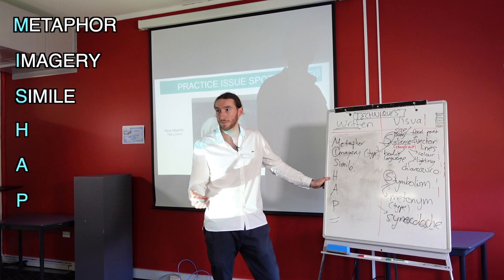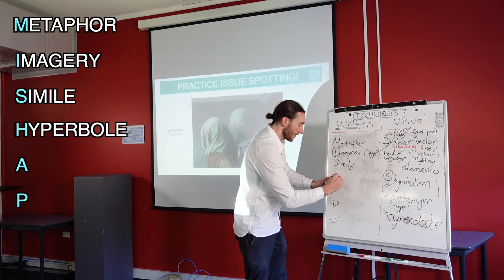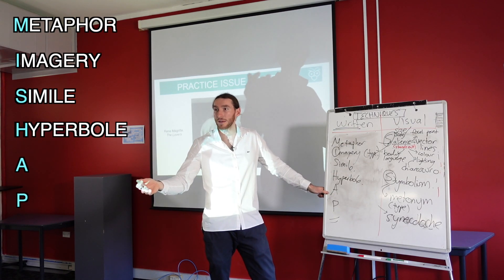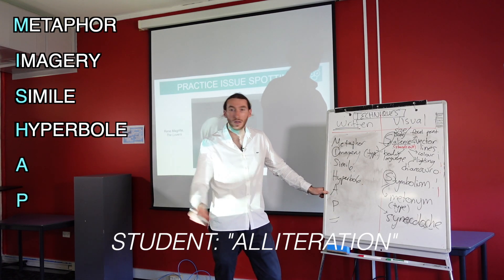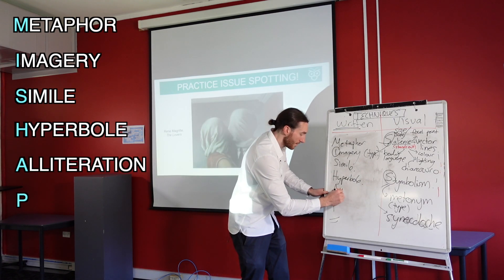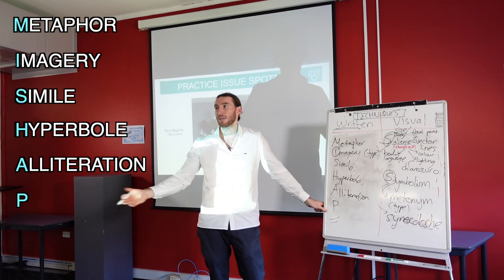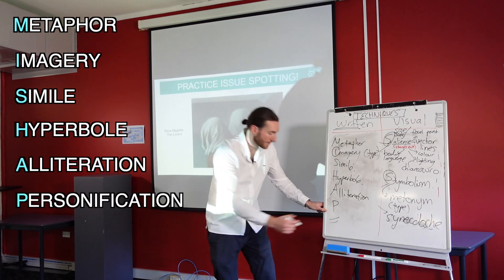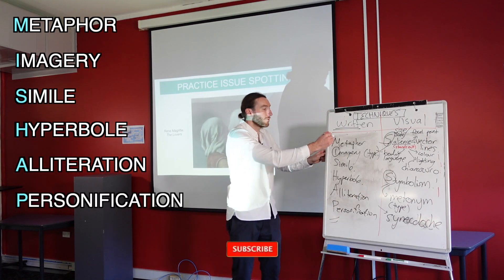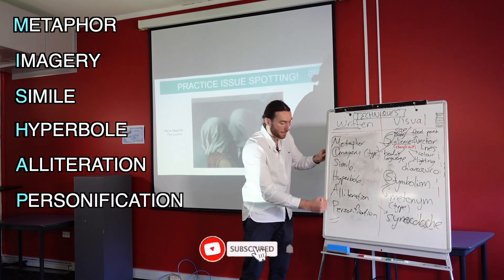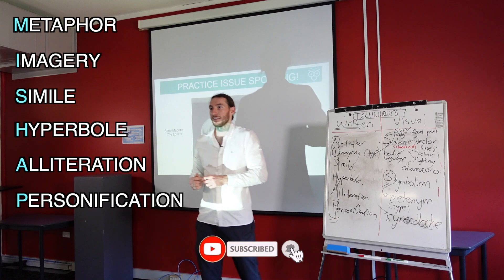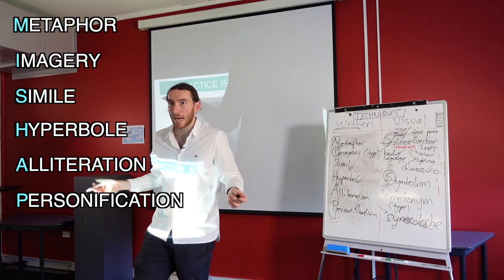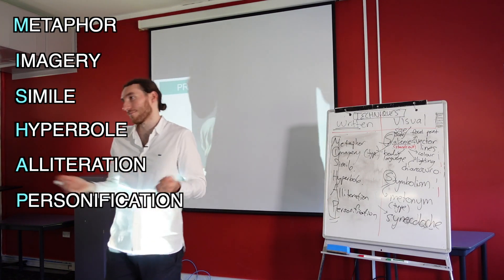H — if you're going to exaggerate something, hyperbole. A — you're going to repeat the sound of something. P — give something human traits. If you want to avoid a mishap, a bad event — a mishappening — you don't want to have a mishap, so you think MISHAP.